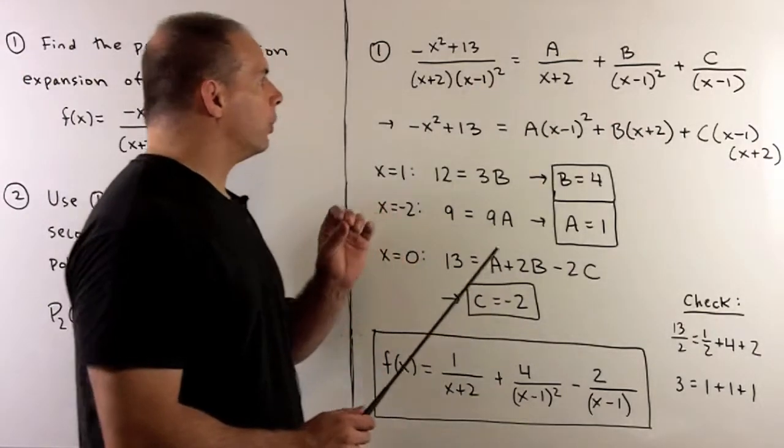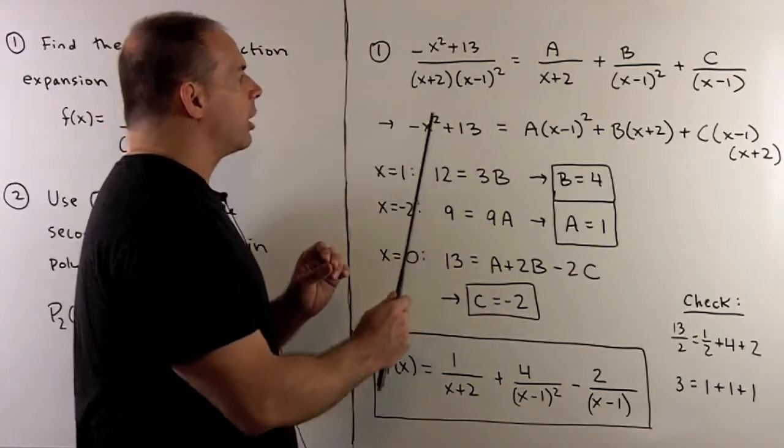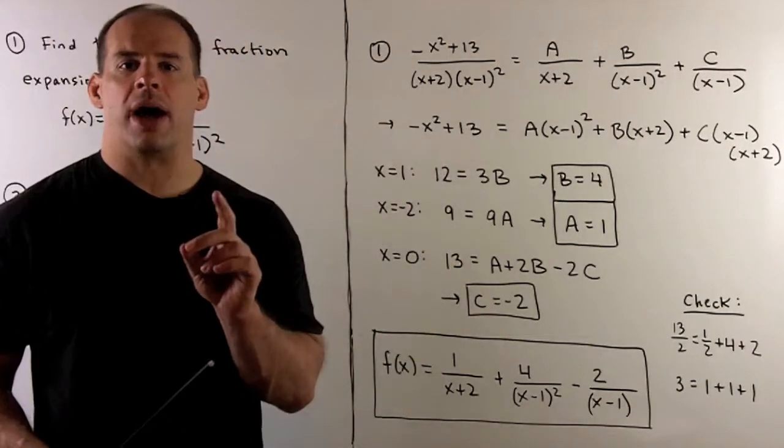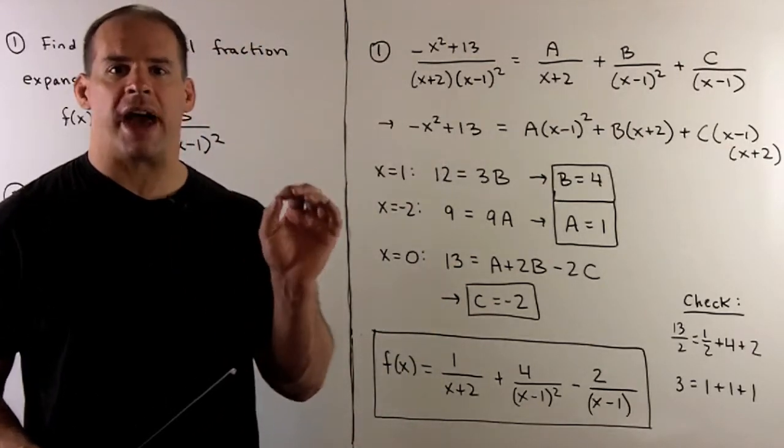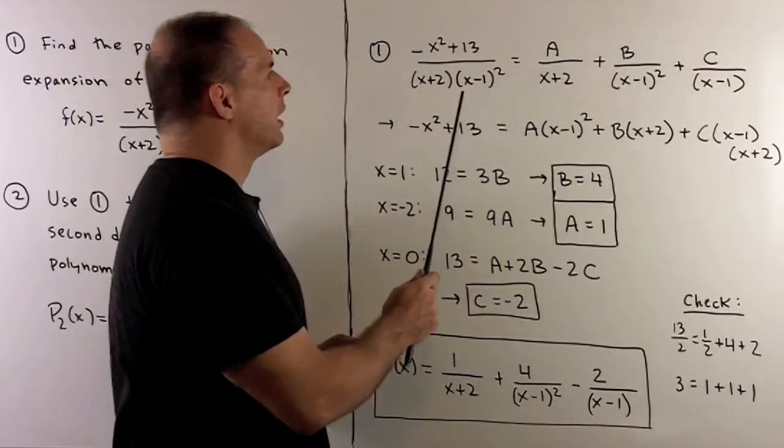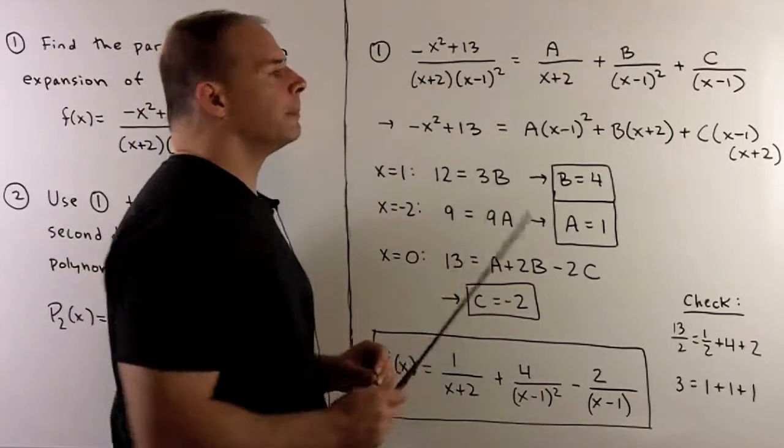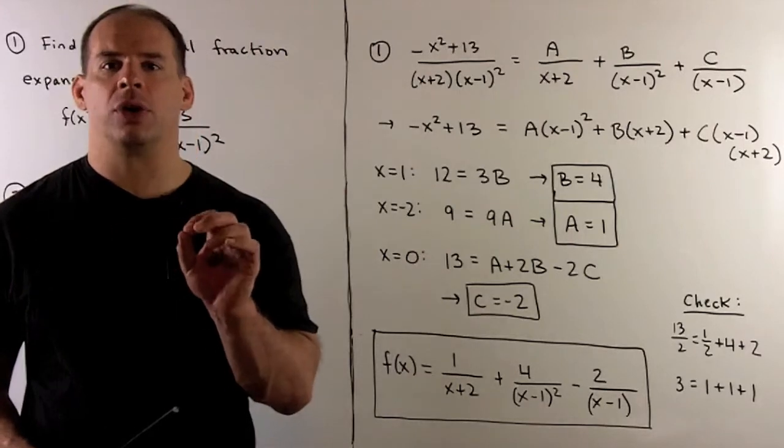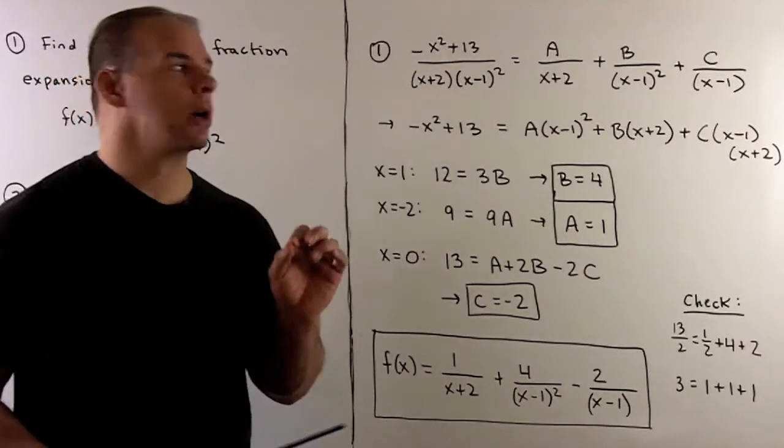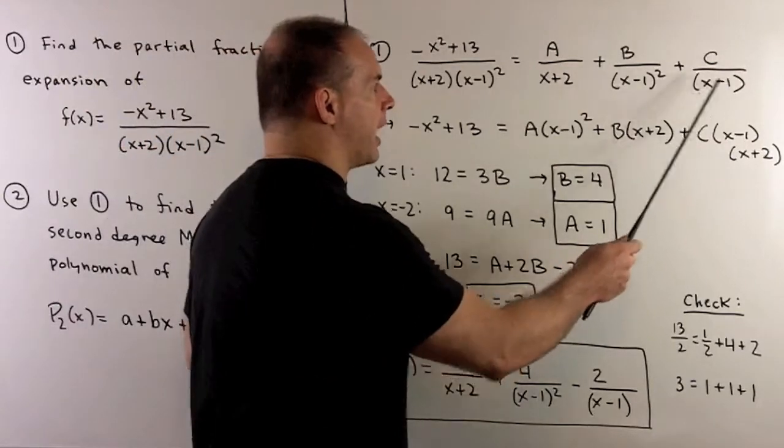We look in the denominator. We have x+2, and (x-1)². I have to assign terms to each factor. We'll have a term for x+2, a term for (x-1)². Because I have a linear factor with an exponent, we also have to assign terms for each lower power. So I also have a term for x-1.